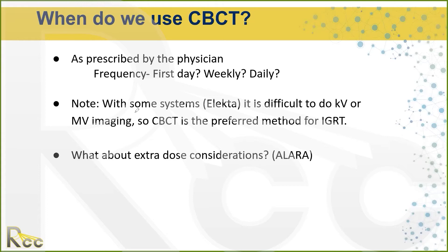I'm not very familiar with Elekta, so I won't speak to that too much. I understand that cone beam is preferred for IGRT with Elekta, and it's apparently difficult to do KV or MV imaging on those machines, which seems unusual. KV and MV imaging are still our bread and butter — especially KV imaging. And let me just say that when doing cone beam, it's often very useful to also do KV imaging — and I'm going to write that here in text because it's very important.